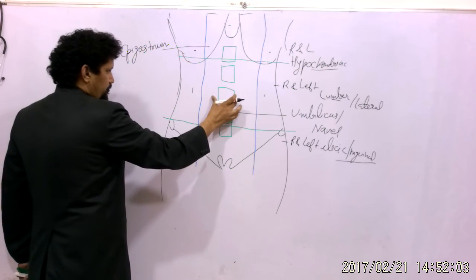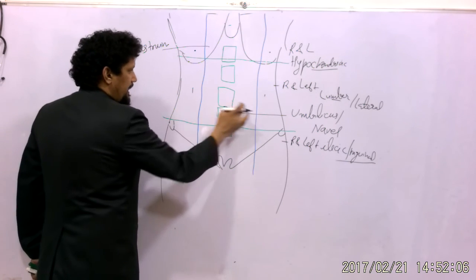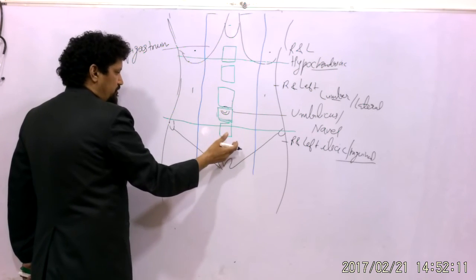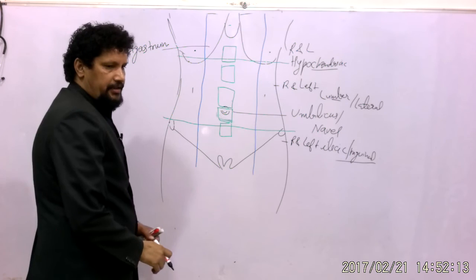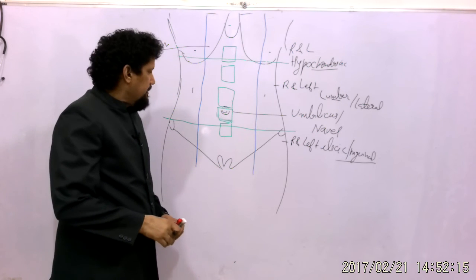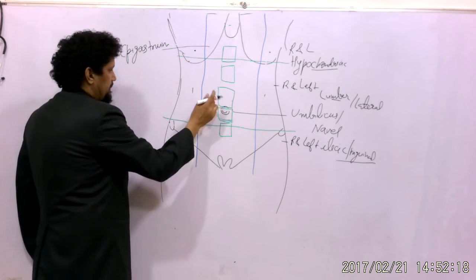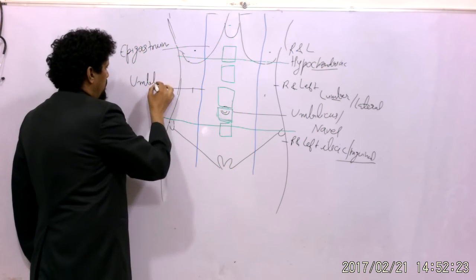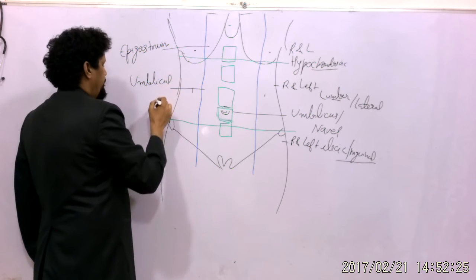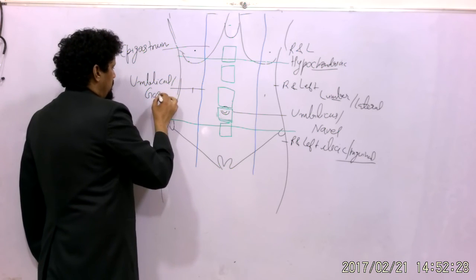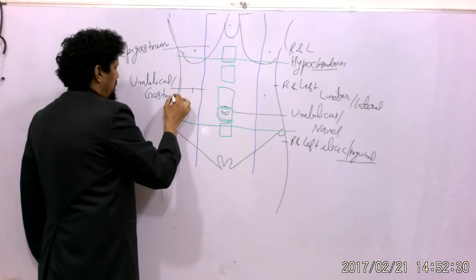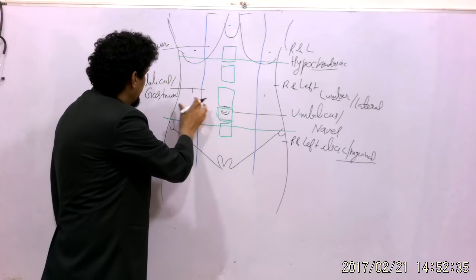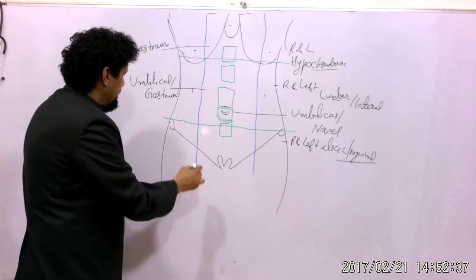The middle region of the median vertical column, between the right and left lumbar regions and between the epigastrium and the lowermost region, is the umbilical region. The lowermost region of the median column, below the umbilical region, is the hypogastrium.